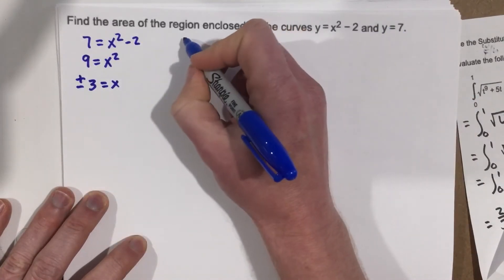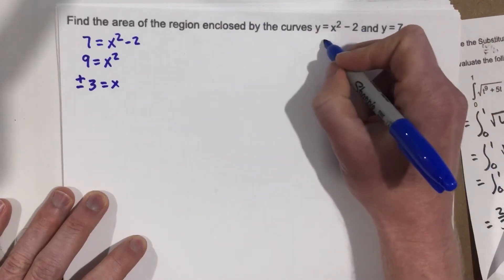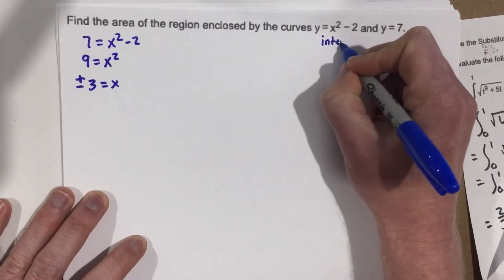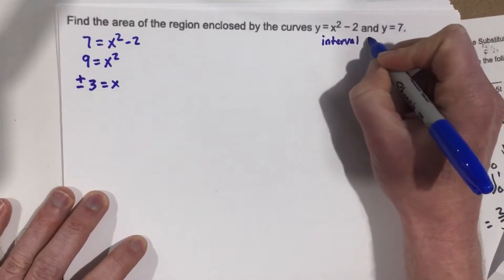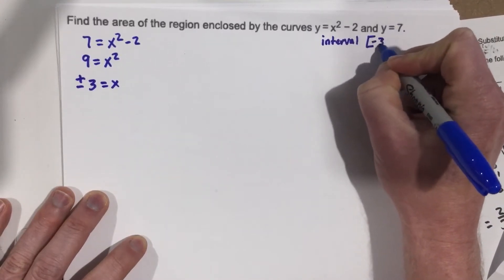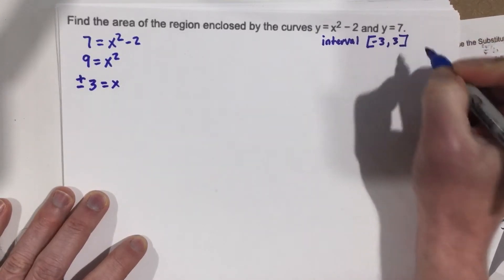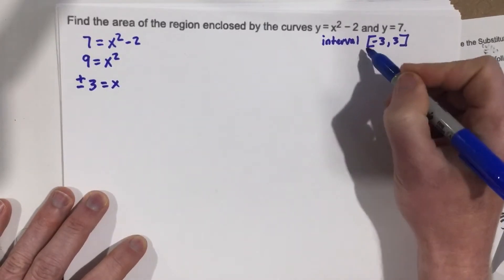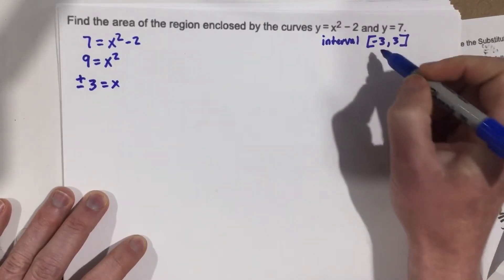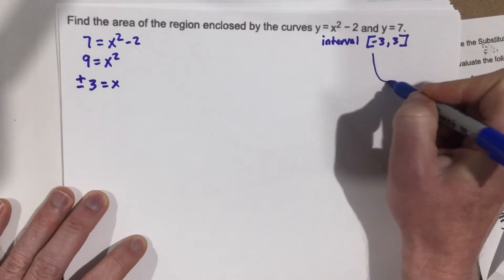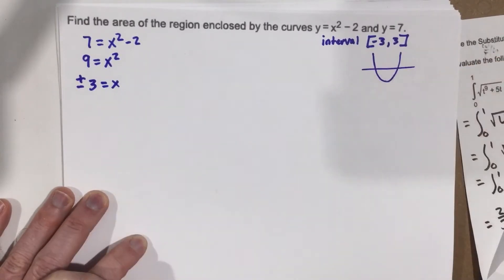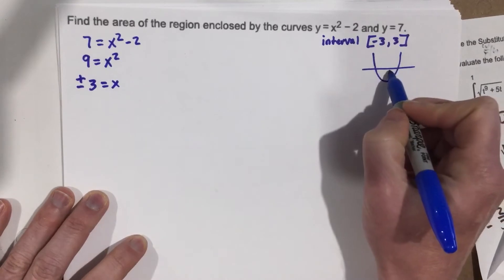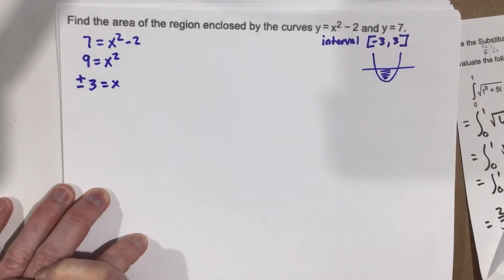So we want to look at the interval from negative 3 to 3, because that's where they cross. Remember, this is a parabola, so it looks like this, and then we have a line through it. So we're looking at something that's like so, and we're looking for this area there.